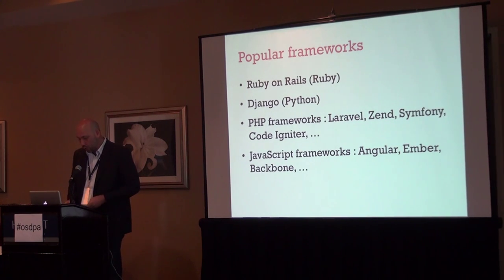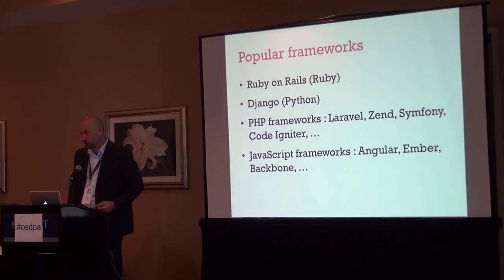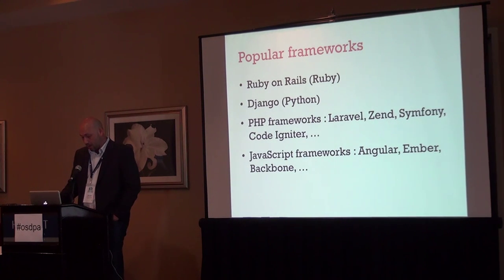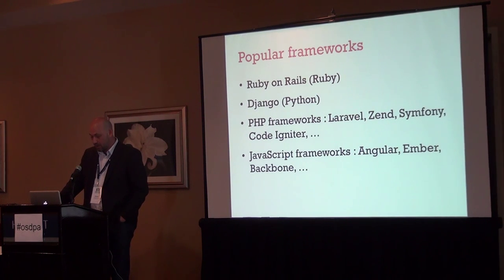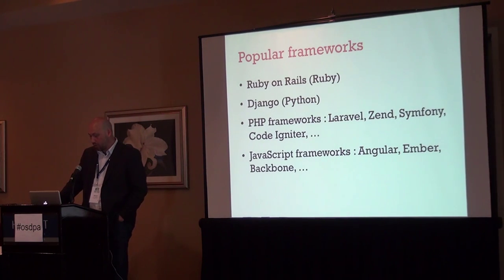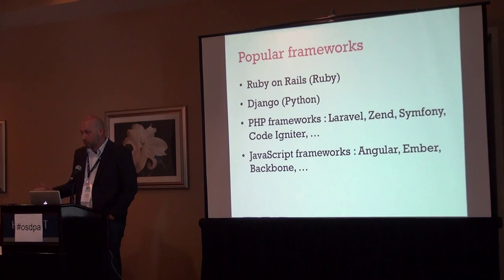Some popular frameworks: Ruby on Rails, written in Ruby; Django, written in Python; numerous frameworks for PHP; and an increasing number of frameworks for writing JavaScript applications. These JavaScript frameworks are getting a lot of attention recently and are largely responsible for the growing number of pure JavaScript applications available on the web.